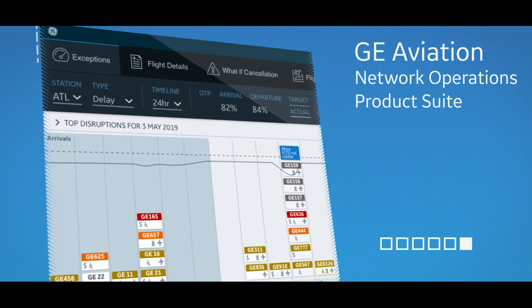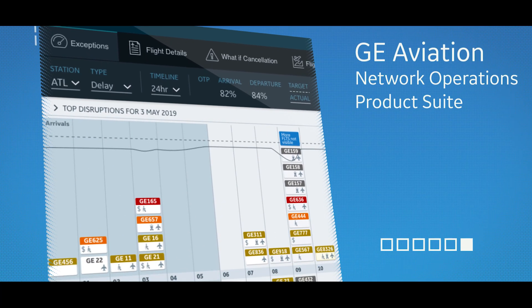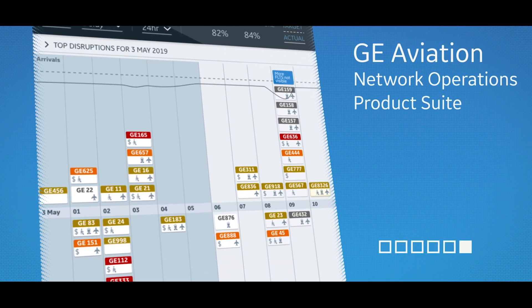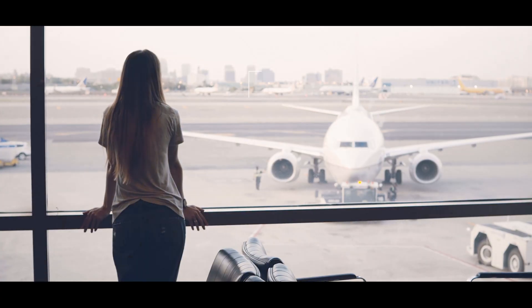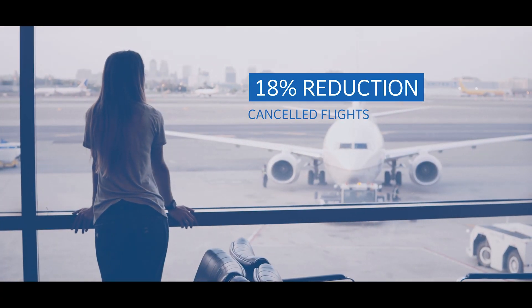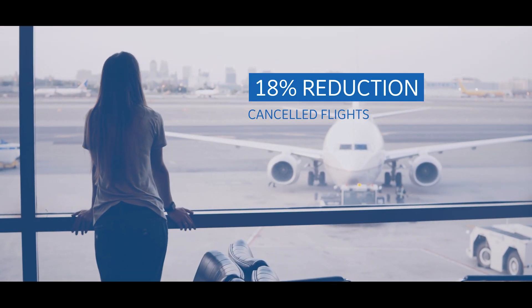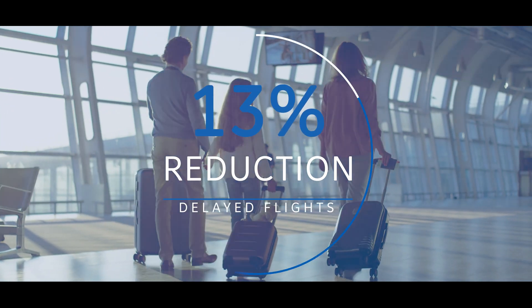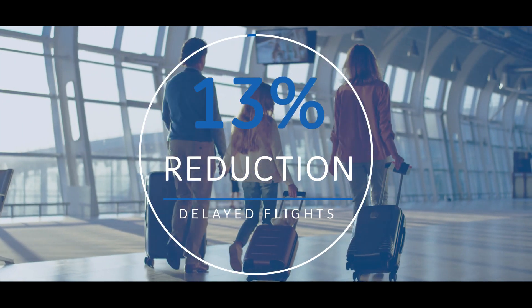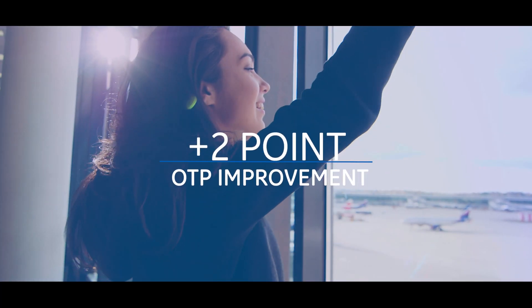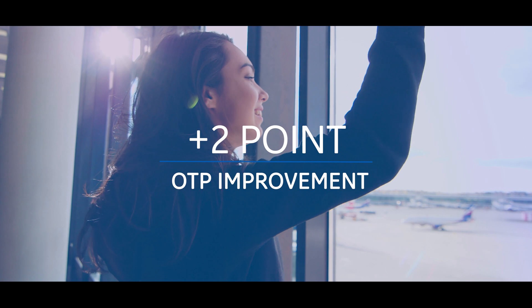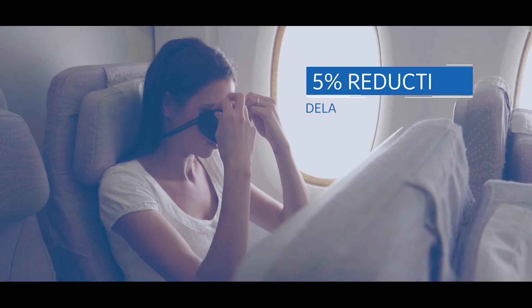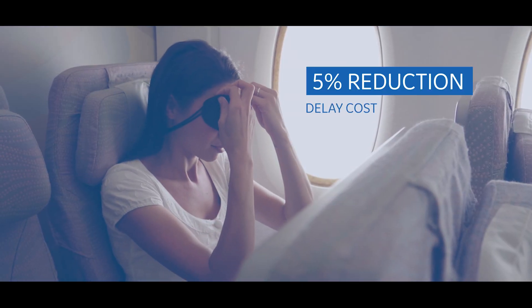GE Aviation's Digital Network Operations product suite has a proven record of success. We expect an average of 18% reduction in canceled flights, up to 13% reduction in delayed flights, and a 2-point improvement in OTP, which could translate to more than 5% reduction in delay cost.